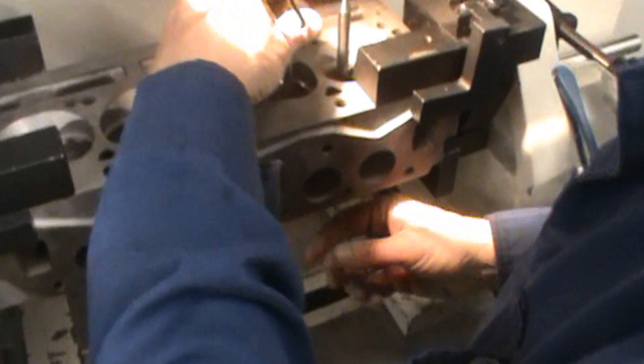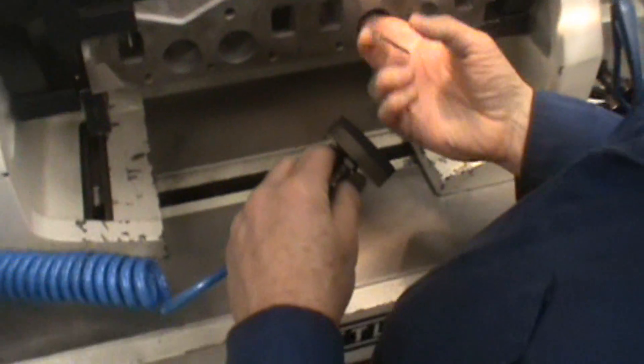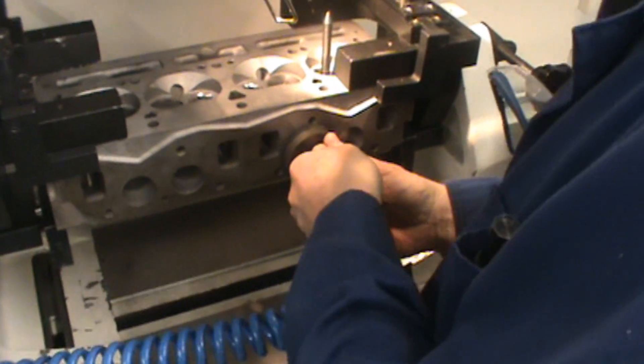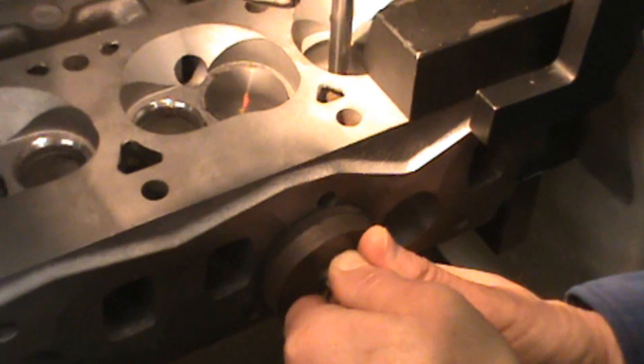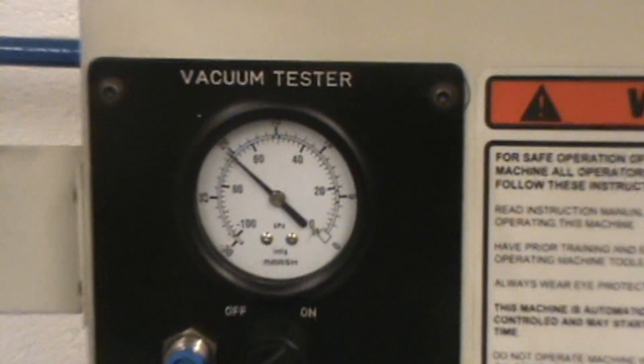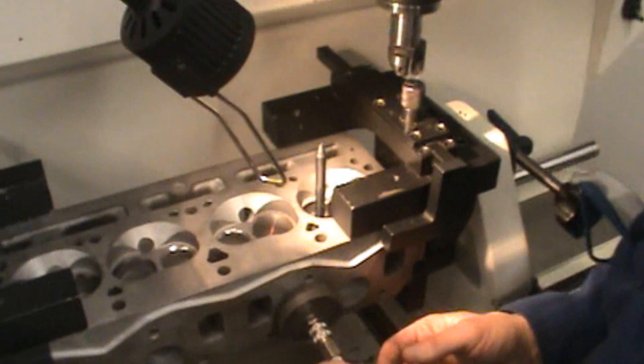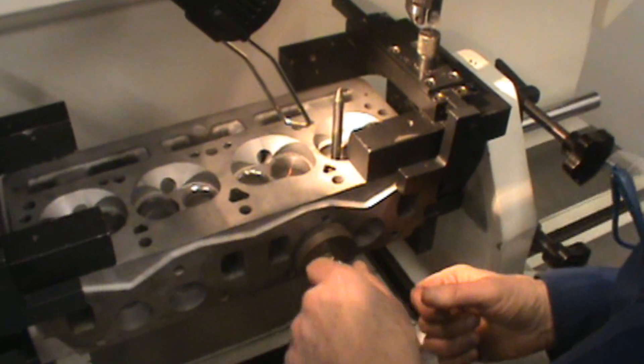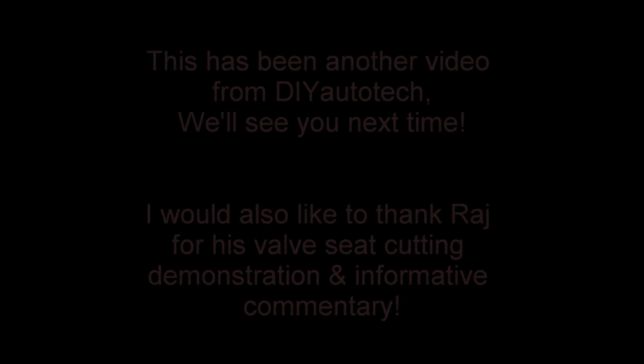So this is establishing that we have a clean cut on the valve seat. And then our next step after that will be to pressure test the system here. So what we've done is put the valve in there and we're pressure testing it. And we're getting about 20 inches of mercury, which is very good. We want to have at least 15 to 20 inches of mercury. This seat is all finished up. And another video from DIY Auto Tech. We'll see you next time.